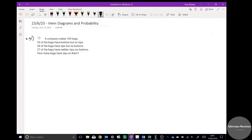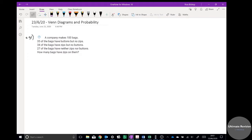This is a big topic at GCSE, Venn diagrams probability questions, really important we know how to do that. The first example says a company makes 100 bags, 35 have buttons but no zips, 35 have zips but no buttons, and some have neither. How many bags have zips on them? When you've got things with multiple options and some overlap, the easiest way to answer these questions is with a Venn diagram. Venn diagrams make it so much easier.